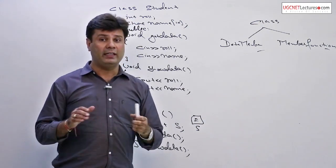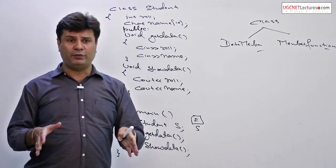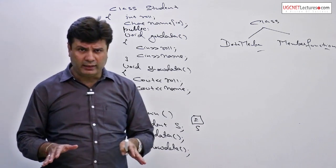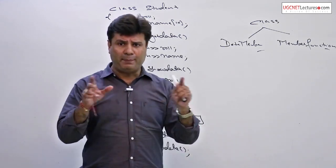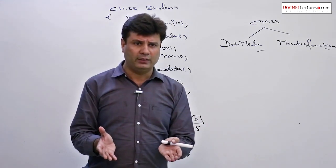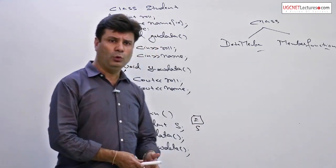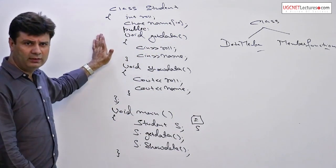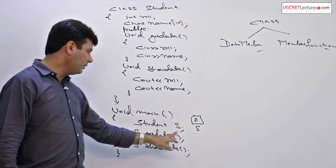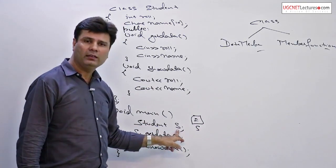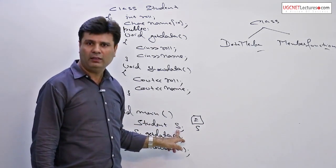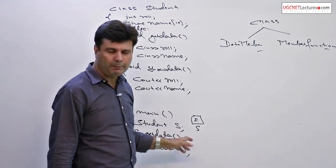Data encapsulation is the first feature of OOP. It is simply a wrapping up of data under a single unit. We did that here, and the entire class can be represented by the single object S.